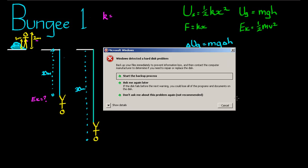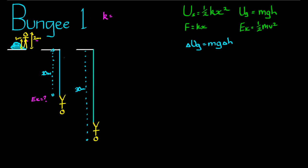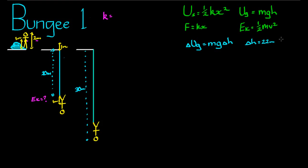If the rope is 20 metres long, the centre of mass started 1 metre below the platform attachment, and finished 1 metre below the end of the cord. So the total distance the centre of mass has fallen is 1 metre plus 20 metres plus another 1 metre. So delta H is equal to 22 metres. Even though the length of the rope is only 20 metres, since the person has effectively toppled over, the total fall of the centre of gravity is 22 metres — 20 metres of rope, 22 metres of fall.